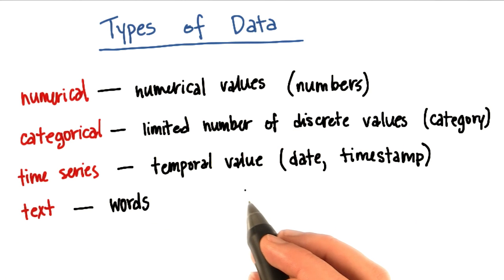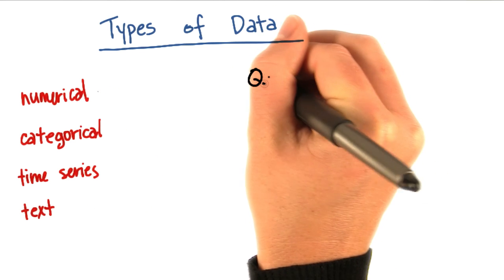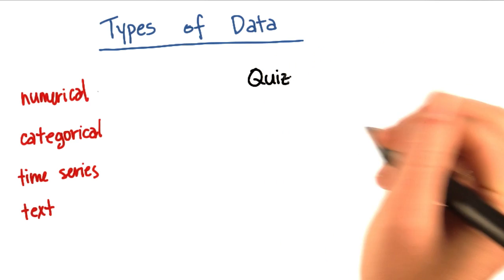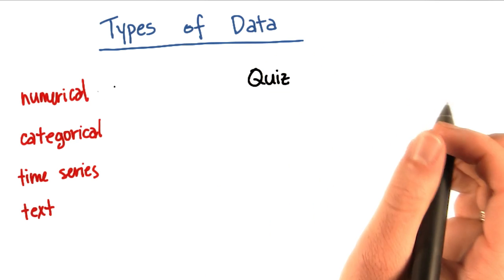So these are all types of data that you might encounter. And depending on exactly the type of data, this might have some repercussions for the type of algorithm that you can use or the type of questions that you can ask of it. So let me give you a quiz just to practice this.